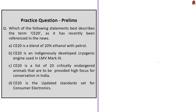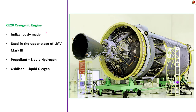The next question asks for the best description of CE20, recently seen in news. The correct answer is option B — CE20 is an indigenously developed cryogenic engine used in LVM Mark III (formerly known as GSLV Mark III). CE20 made news because a successful hot test was conducted. A hot test checks all engine parameters — wear and tear, temperature, etc. — as they would function in real time. The main difference between a hot test and a cold test is that in a hot test, the engine is loaded with fuel and performs combustion, whereas in a cold test there is no combustion.